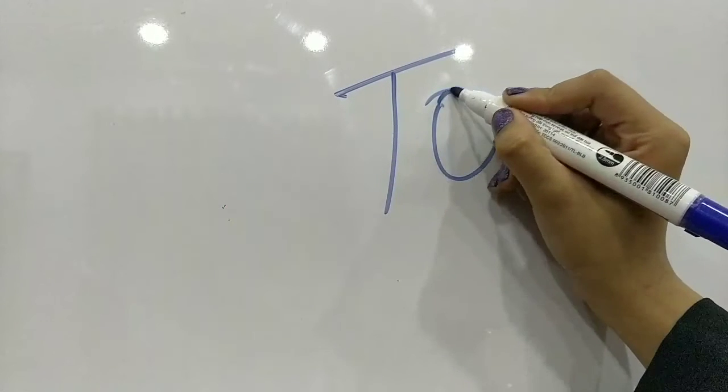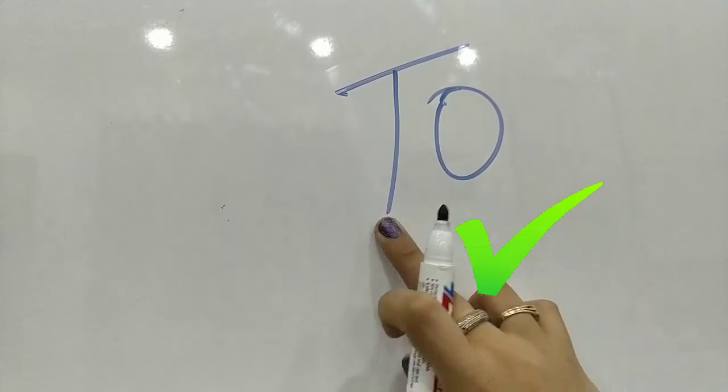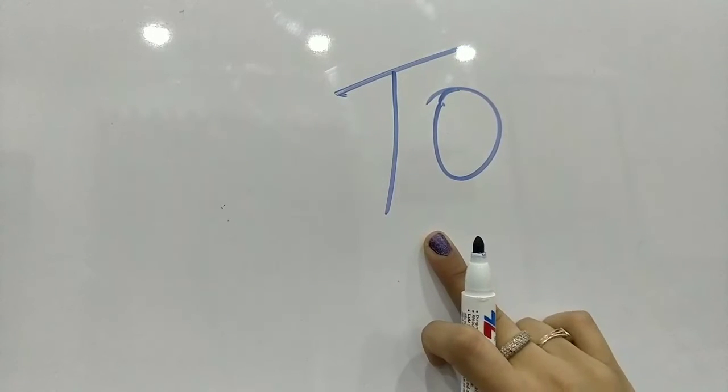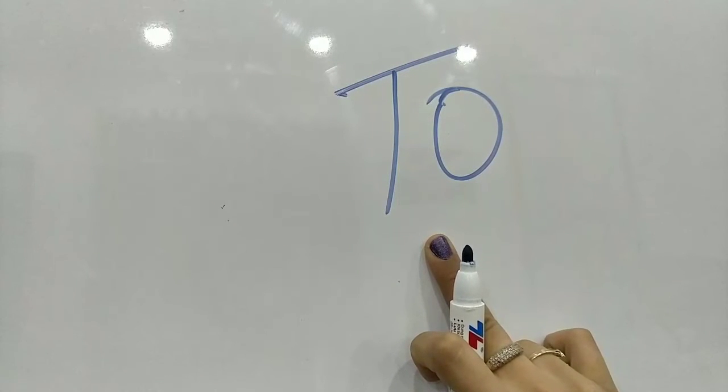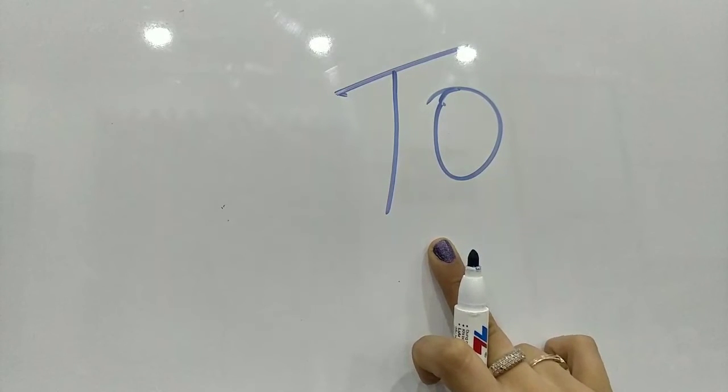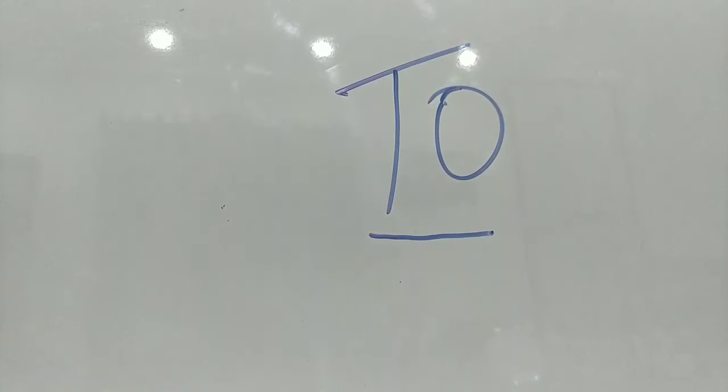Very good. Likewise, this word as we have talked about do you. This is to. This is T and O. So it is to and not to. We're not going to say I am going to school. No. We are going to say I am going to school. Very good. It's simple. It is to.